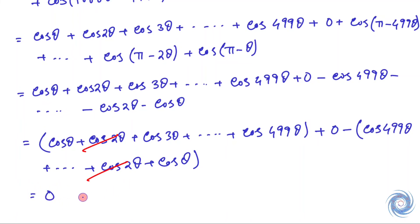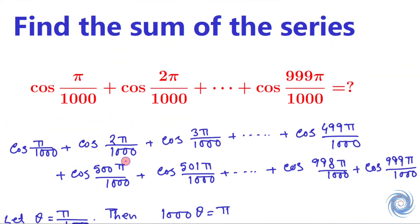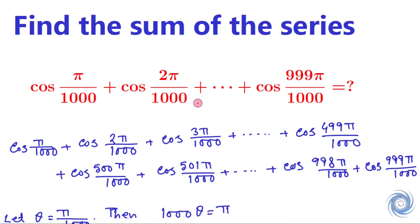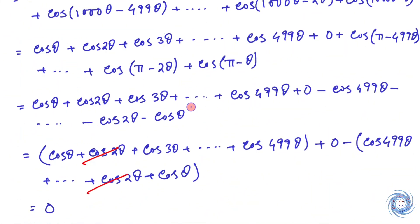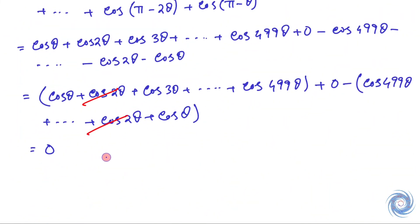Ultimately we have 0. So in this question we are supposed to find the sum of this expression, and the value of the given expression is 0.